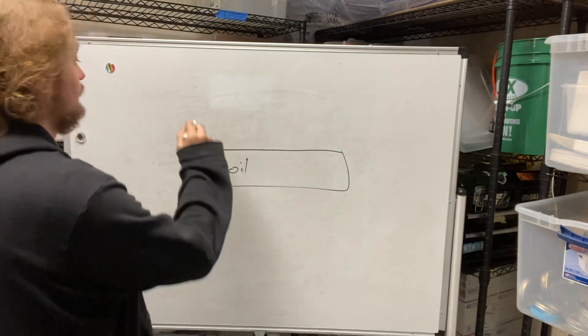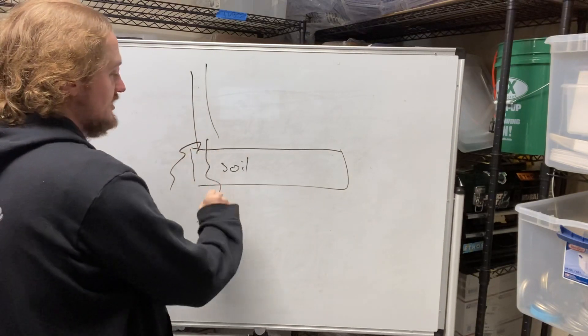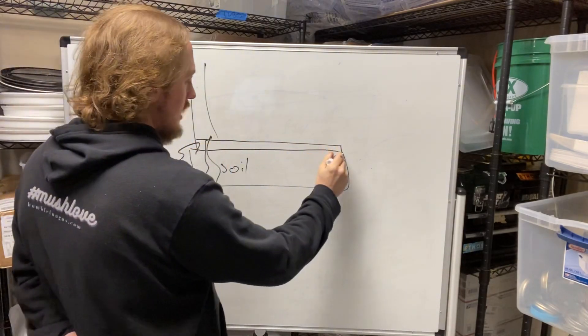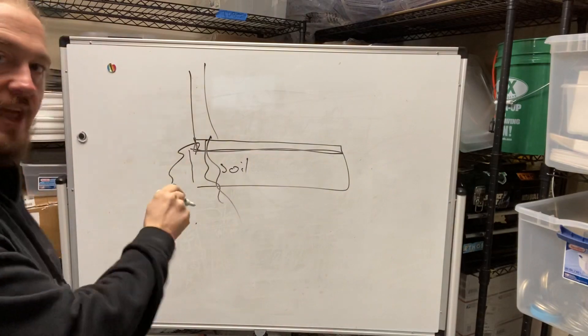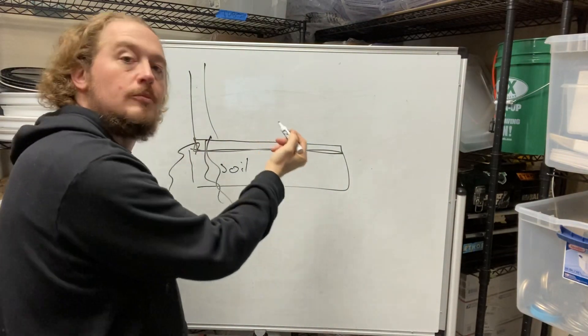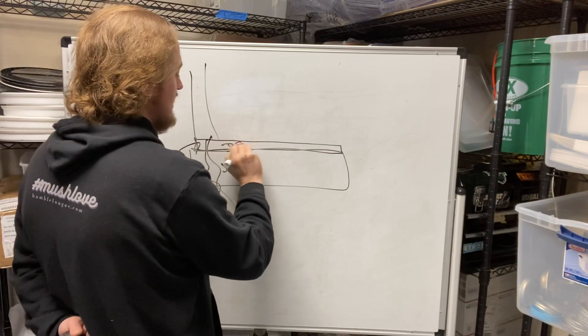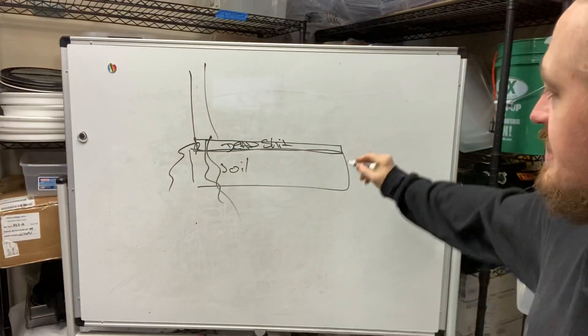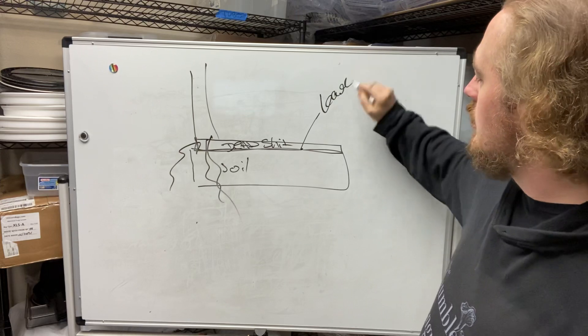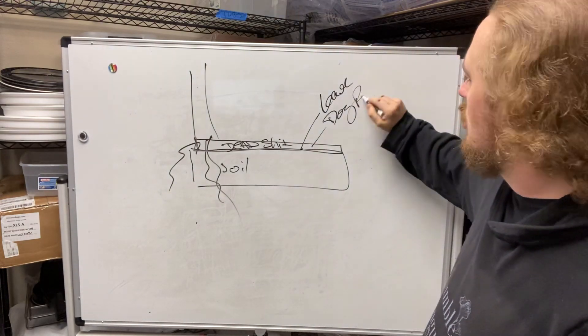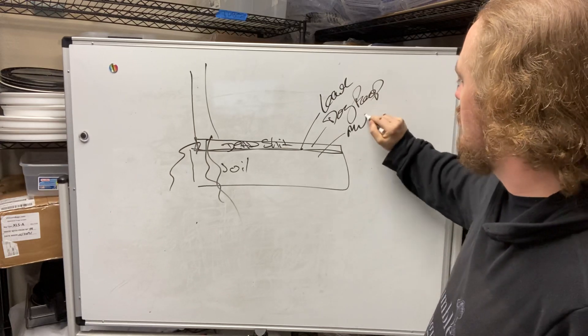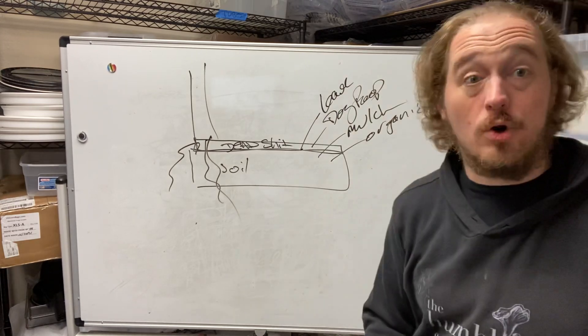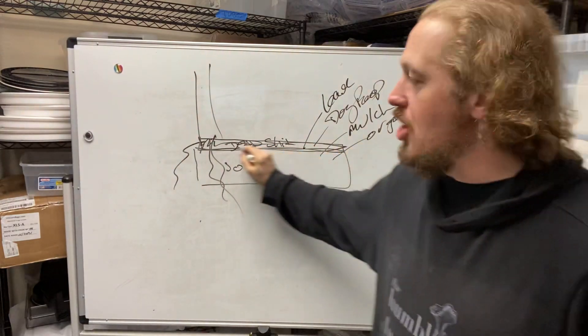Above this, you've got trees that are putting the roots down into here, etc. But above this layer, there's another layer. What is this layer in between the soil and the sky? This is dead shit. What's in this layer? Leaves, dog poop, mulch, organics, etc. That's all in this layer right here above the soil.